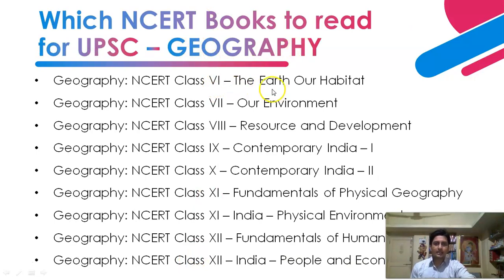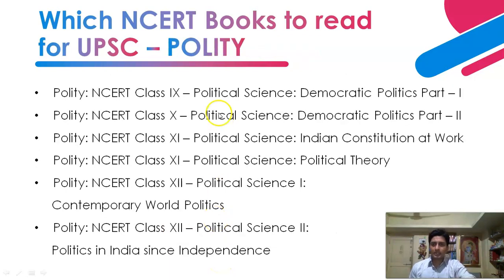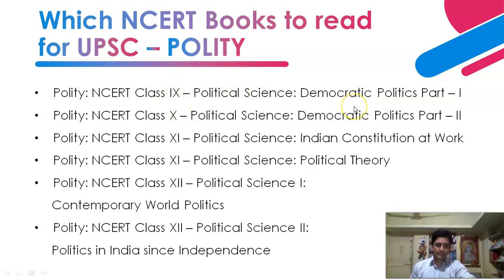For geography, class 6 NCERT is titled 'The Earth: Our Habitat.' Starting from class 6, you can read up to class 12, which is titled 'India: People and Economy.' For polity, you don't need to start from class 6 — you can start directly from class 9, whose NCERT is 'Political Science: Democratic Politics Part 1,' and read up to class 12 titled 'Politics in India Since Independence.'